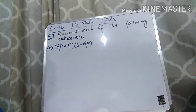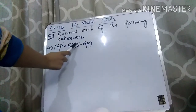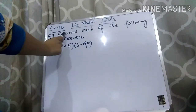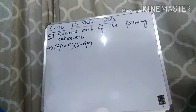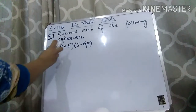Before starting the lecture, I have a request: if you want more help regarding your subject, then you can subscribe to the channel. Let's come to the lecture. Part A is (6P + 5) and (5 − 6P), and the question is to expand each of the following expressions. Basically we need to expand them by using the formula. So students, here this is (6P + 5).